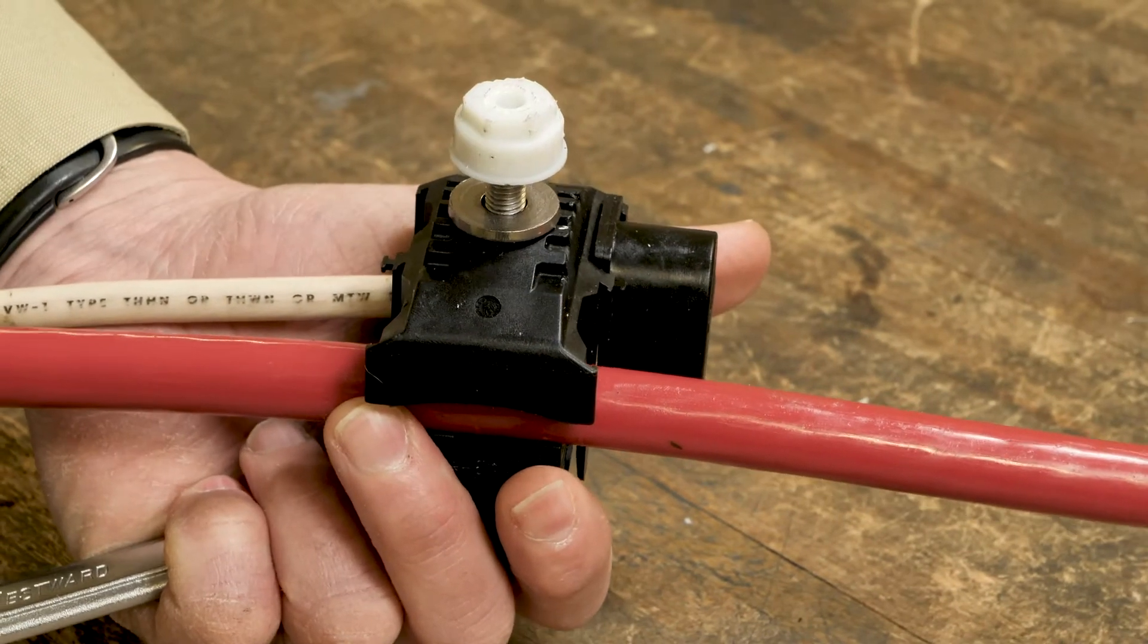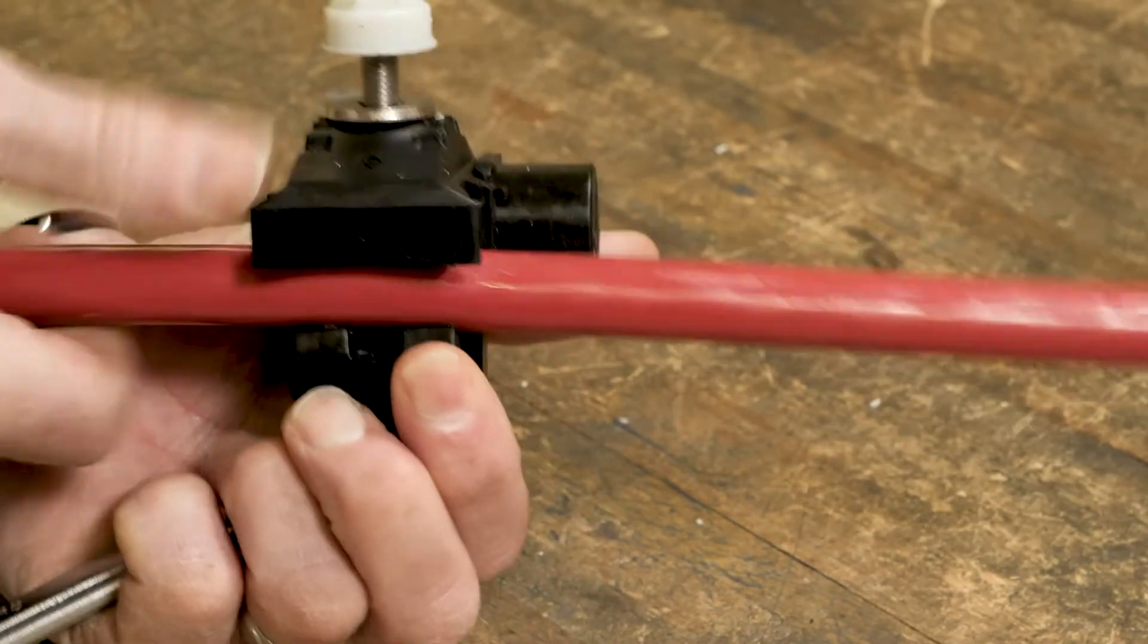The large hex beneath the tightening hex can be used to remove the connector from the conductor if needed.